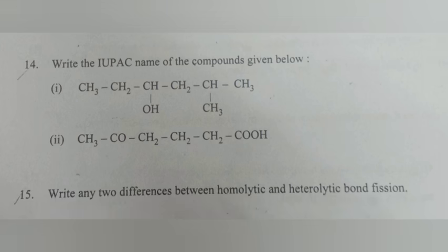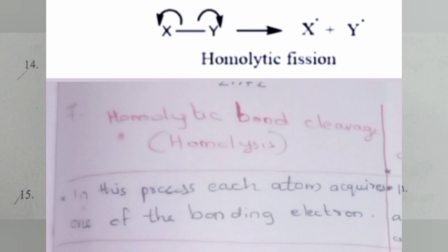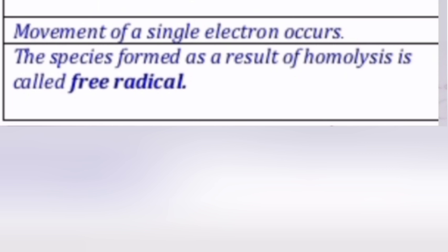Question 15: Write any two differences between homolytic and heterolytic bond fission. Homolytic bond homolysis: It is the process where each atom occurs one of the bonding electrons. Movement of a single electron occurs. The species formed as a result of homolysis is called free radical. Write any two.